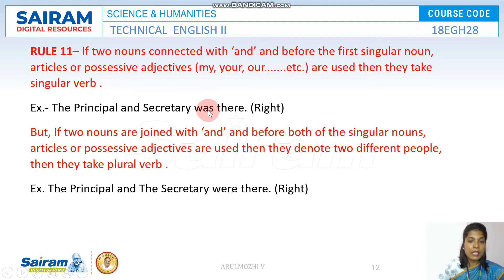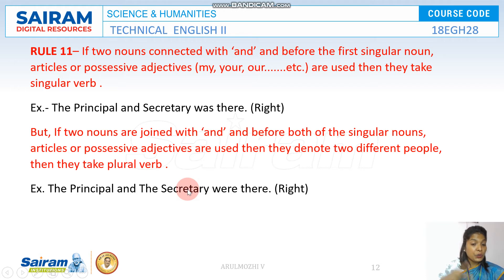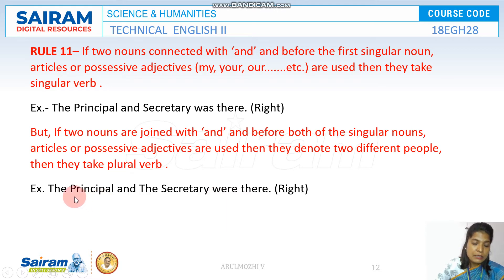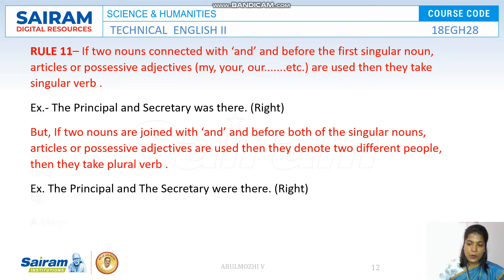But if you use two articles or two adjectives before each of the nouns, it means two different people. For example: 'The principal and the secretary were there.' 'Your principal and your secretary were there' — meaning your principal and your separate secretary were both at the meeting.